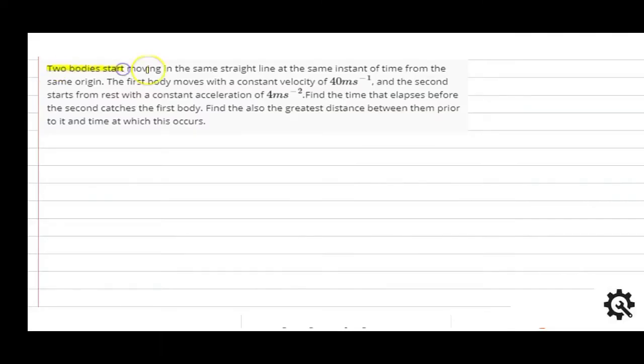Two bodies start moving in the same straight line at the same instant of time from the same origin. The first body moves with a constant velocity of 40 meters per second, and the second starts from rest with a constant acceleration of 4 meters per second squared. Find the time that elapses before the second catches the first body.